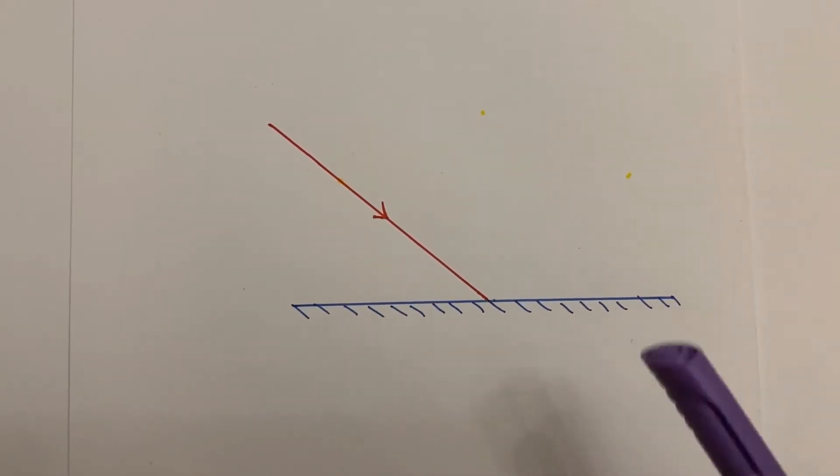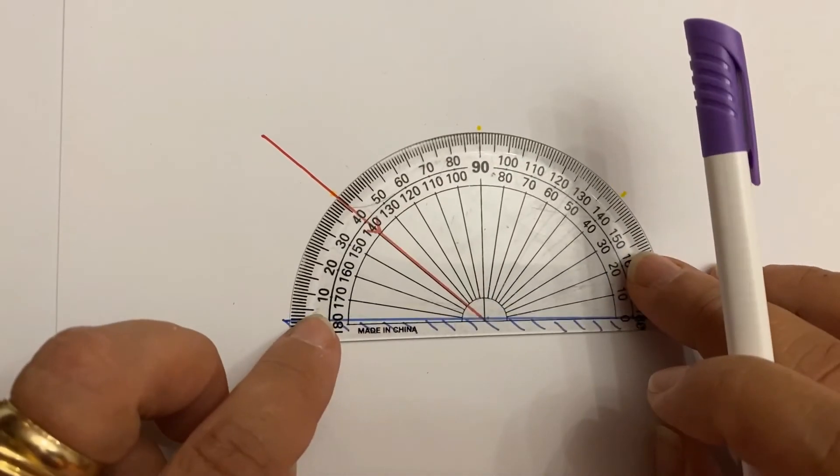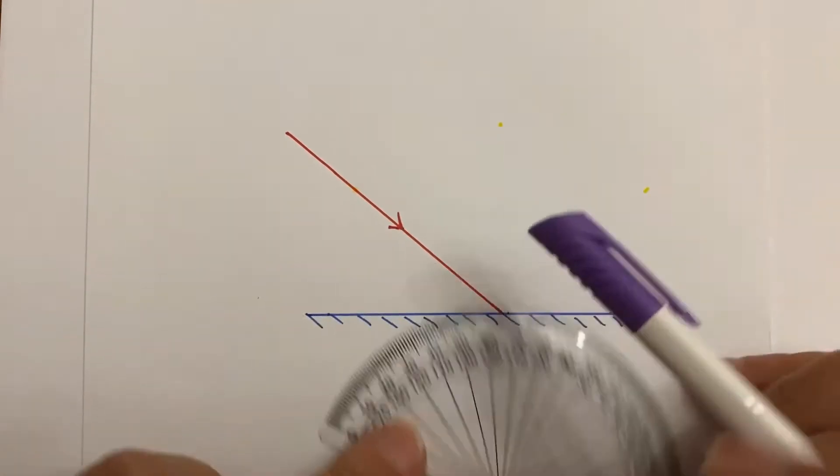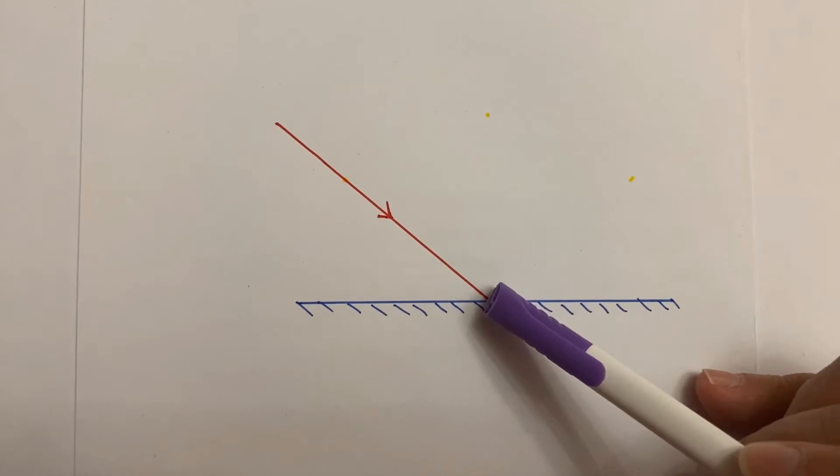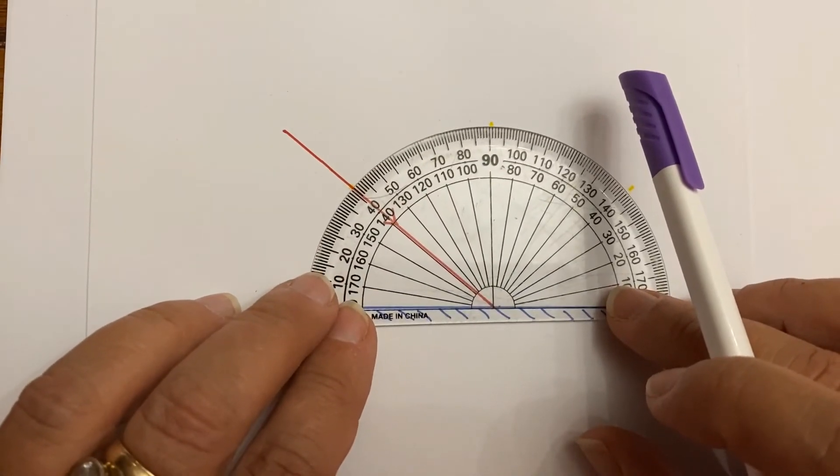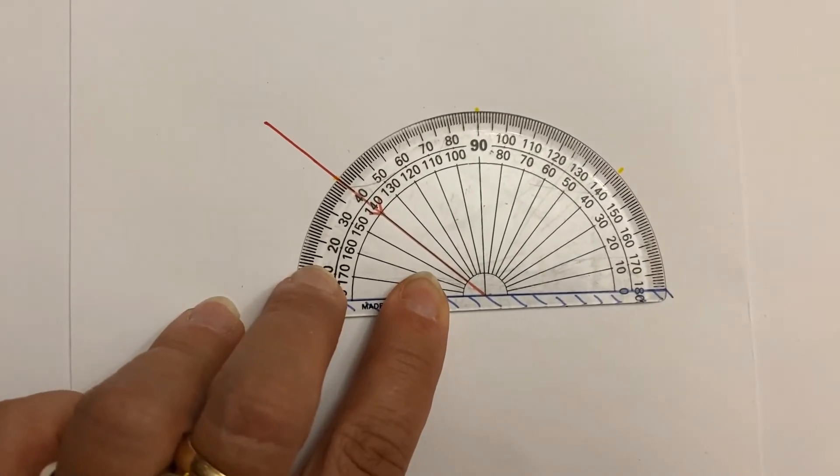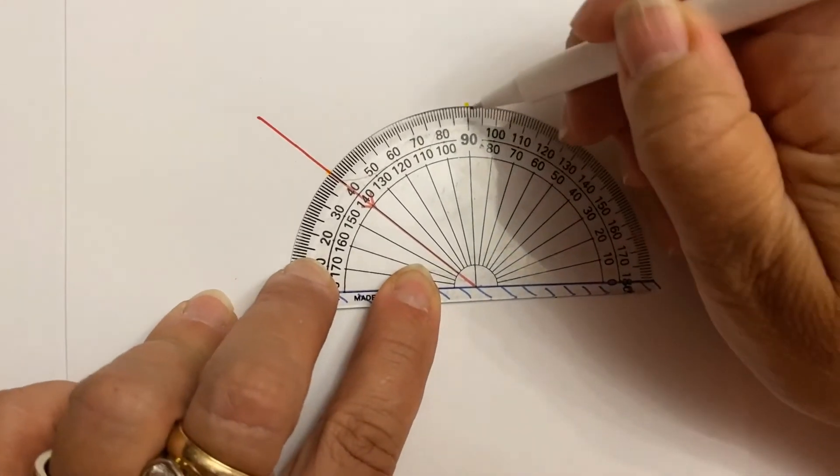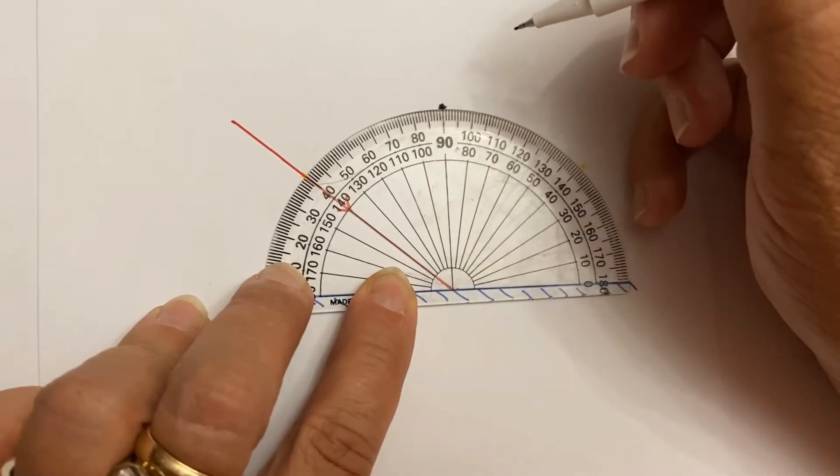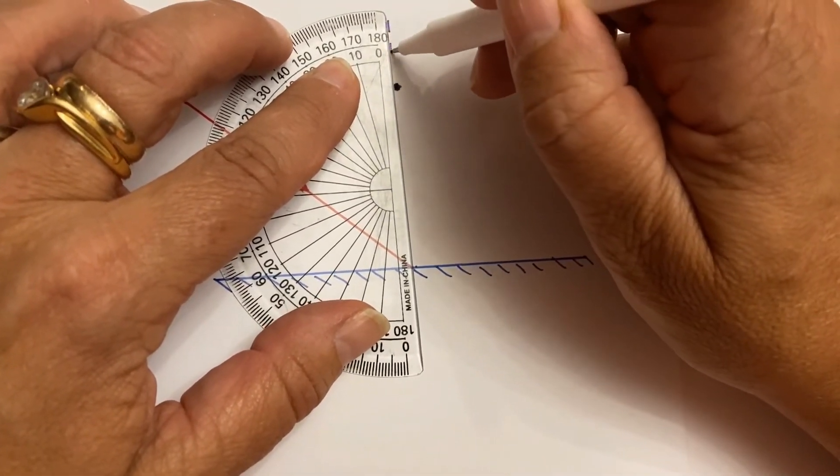Second step is to draw your normal. So you need your protractor. You take your protractor, you make sure it's lined up. It has to be very straight and has to go right at this point where the incident ray or reflective ray is hitting the mirror. So you go here and you want to line it up and then measure it 90 degrees, make a little ticky boo thing, and then you line it up and draw little dashed lines.